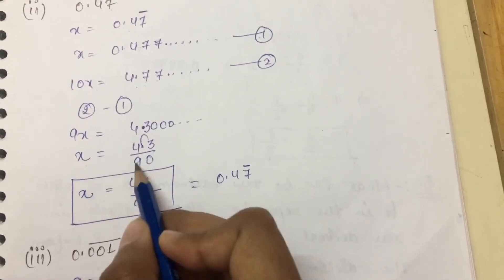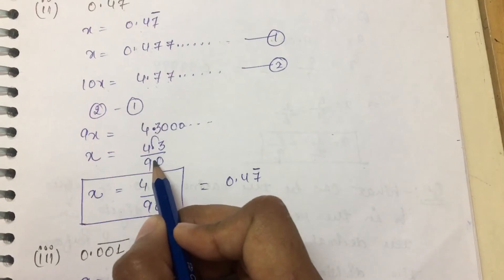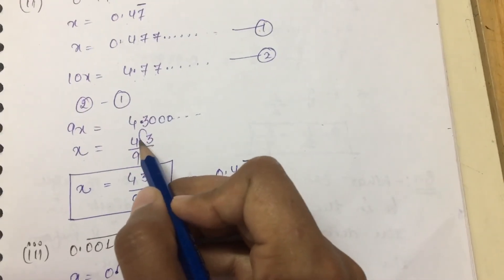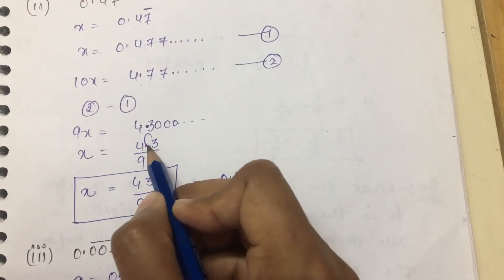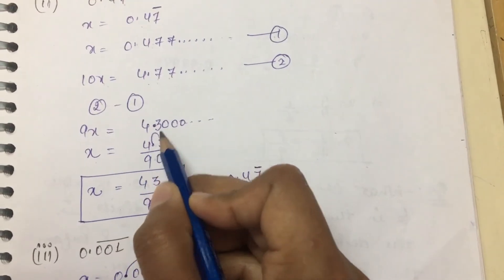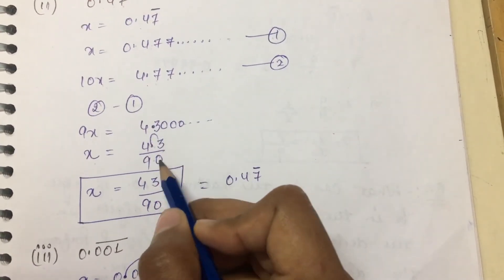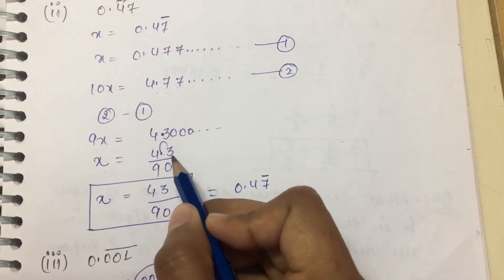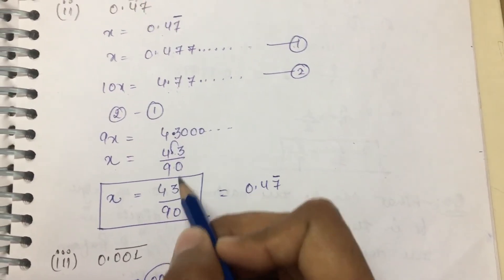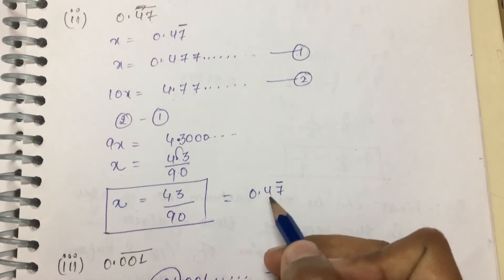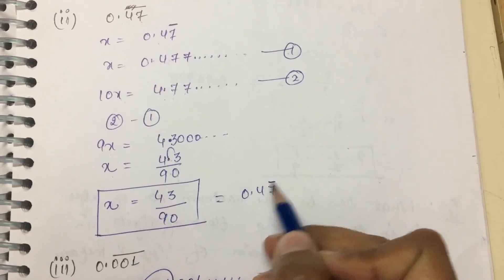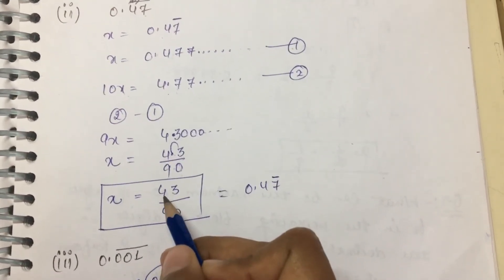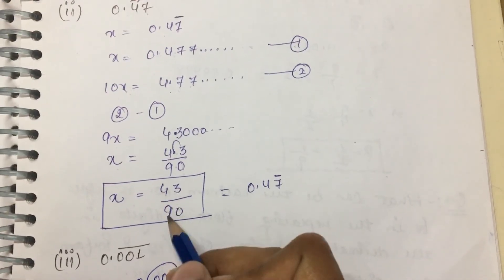So 9x equals 4.3. The 9 in the denominator comes from here when we divide. We can write this in p by q form which is 43 by 90.